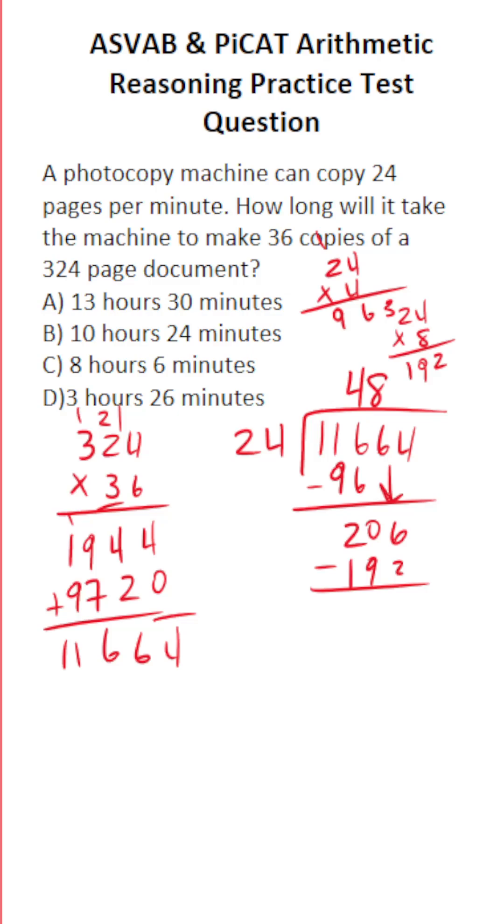Let's do this subtraction here. 6 minus 2 is 4. 20 minus 19 is 1. And we've got to drop down this 4. How many times does 12 go into 144?